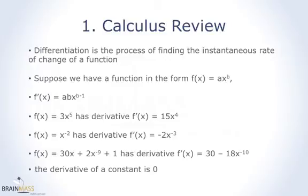And when you have multiple terms adding or subtracting, you can differentiate term by term. So in the last example, 30x + 2x^(-9) + 1, well, you begin by differentiating the first term. So 30x becomes 30.